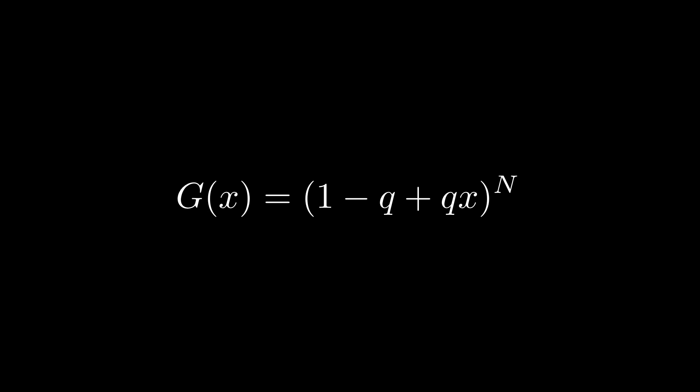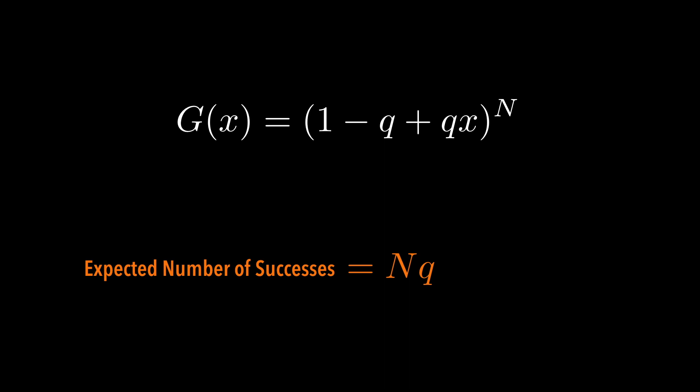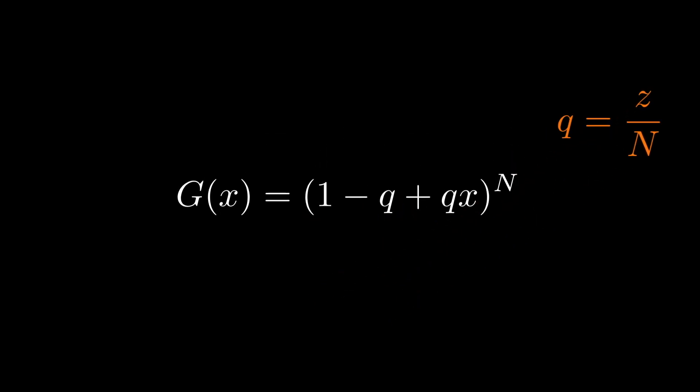So let's play with this function a little bit more. What would happen if N goes to infinity while q is small so that the expected value remains some finite value? Let's first rewrite q in terms of the expected number of successes, which is N times q. If we call it z, q should be z over N. If we replace q in the generating function, then we get...